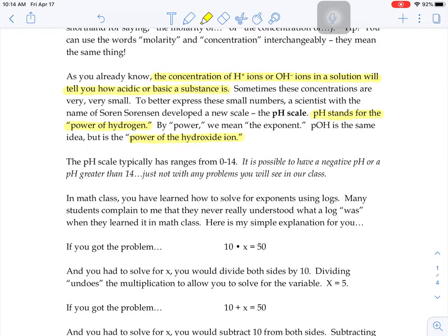The pH scale typically goes from 0 to 14. It is possible to have a negative pH or a pH greater than 14, just not with any of the problems you're going to see in our class.